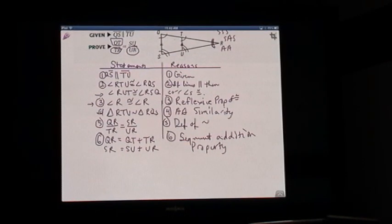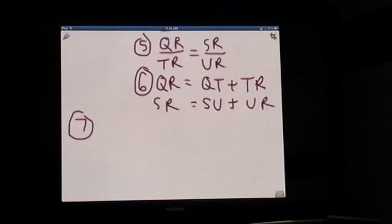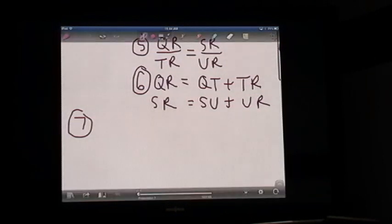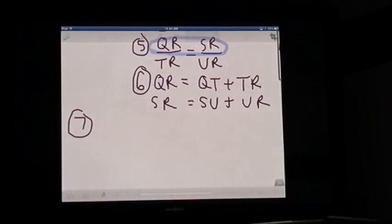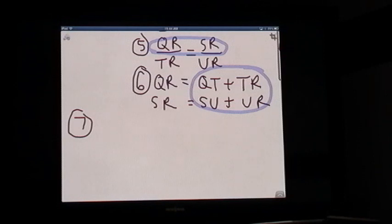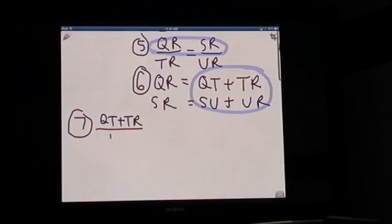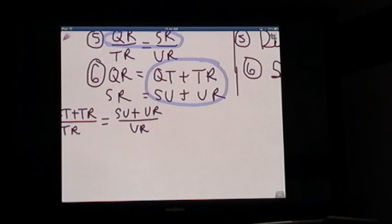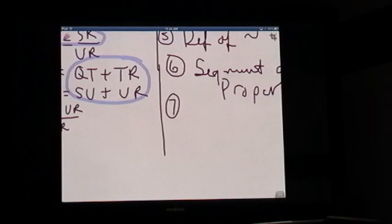Now, to get rid of that piece, since QR equals QT plus TR, by substitution we take those two expressions and substitute them in. So we're going to say QT plus TR over TR is equal to SU plus UR over UR. That is by substitution.